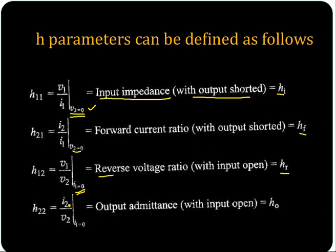It is a ratio of current to voltage, so it is opposite of impedance — it is admittance. It is an output side parameter using I2 and V2 for I1 equal to 0. So here you get output admittance with input open, indicated by HO.